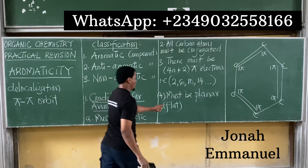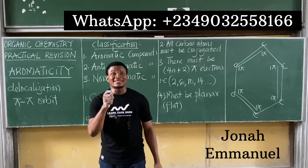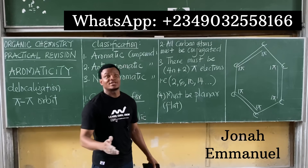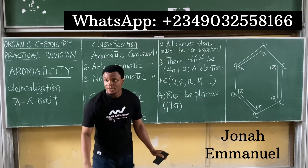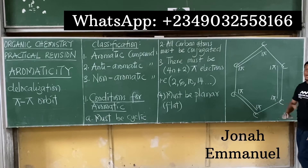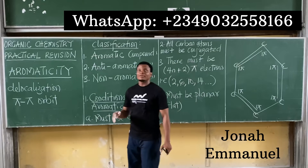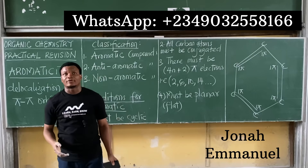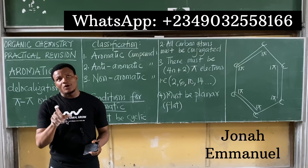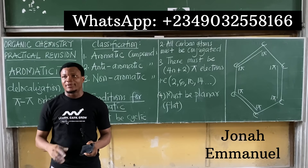Benzene has six carbons — one, two, three, four, five, six — so it's planar. Seven and below is always planar. The smallest cyclic compound starts from three carbons; you can't have a two-carbon cyclic compound. So for anything from three to seven carbons, it's planar.